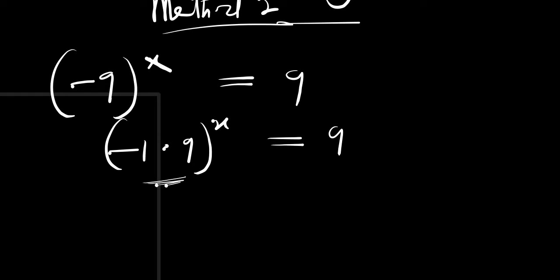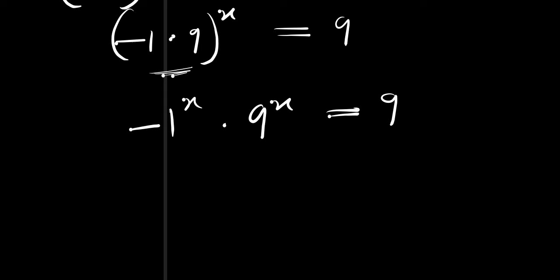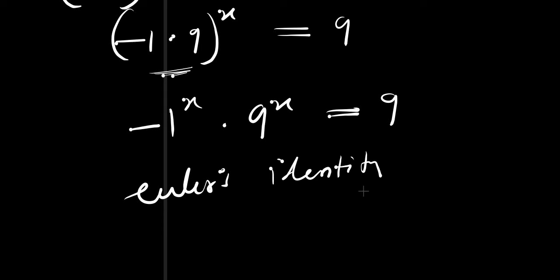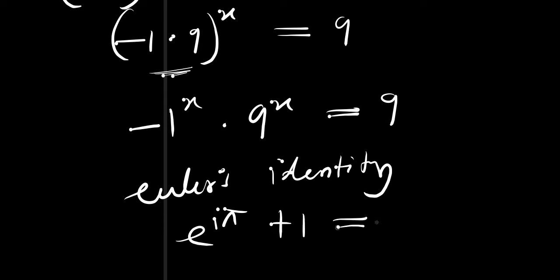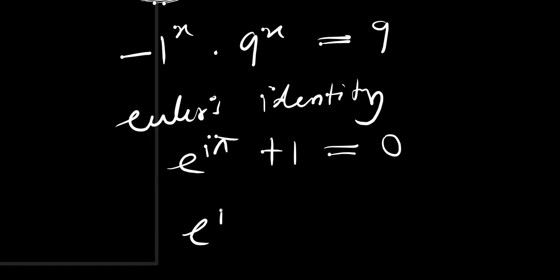We expand this and write it as negative 1 to the power x times 9 to the power x equals 9. At this point we make use of Euler's identity. Euler's identity states that e raised to the power of i times pi, plus 1, equals 0. From here we have e raised to the power of i times pi equals negative 1.